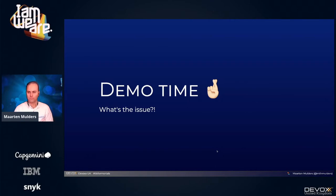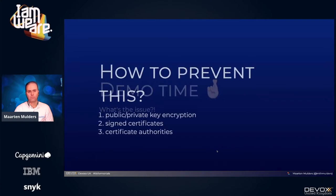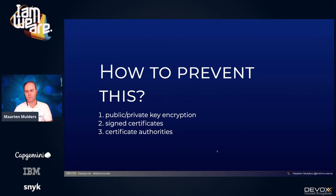This means that if we are in a situation like this, an eavesdropper can read both requests and responses. Lorem ipsum isn't particularly secret data, but you can imagine this would not be fun when talking to an internet banking environment. That's what transport layer security is going to address for us. To make that work, we need to look at three things: public/private key encryption, signed certificates, and certificate authorities — that's roughly the structure for the remainder of the talk.